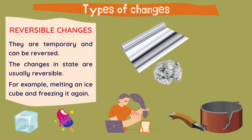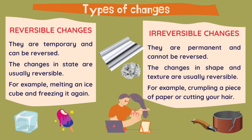We have two types of changes. First, reversible changes — they are temporary and can be reversed; we can go back to the first state. Changes in state are usually reversible. For example, melting an ice cube and freezing it again. The same with ice cream: it can be melted and then frozen again.